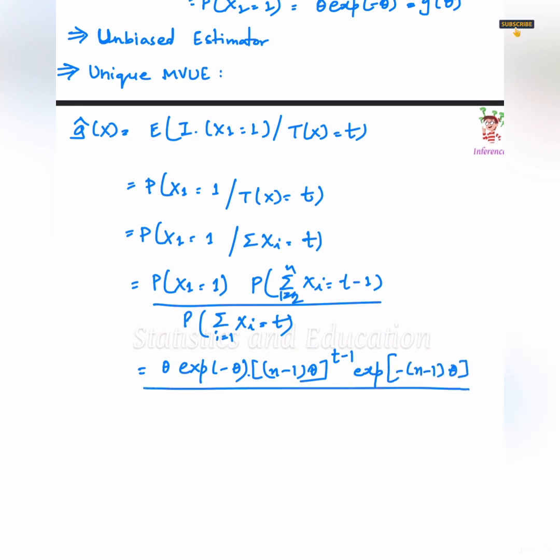Now, we have simply two different PDFs. And we can use the reproductive property of Poisson estimator. So, g hat x equals to t upon n times 1 minus 1 by n to the power t minus 1.